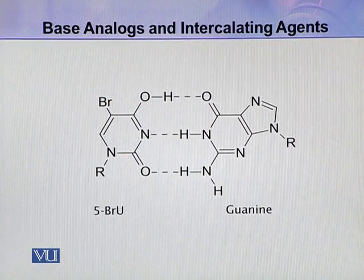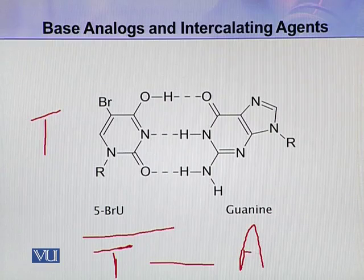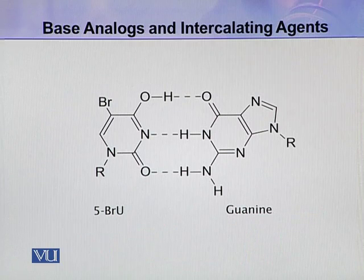Here you can see 5-bromo-uracil, which is a base analogue of thymine. In the normal sequence, thymine would be present and adenine would pair with it. But this base analogue replaces adenine with guanine, so 5-bromo-uracil base pairs with guanine instead of adenine.